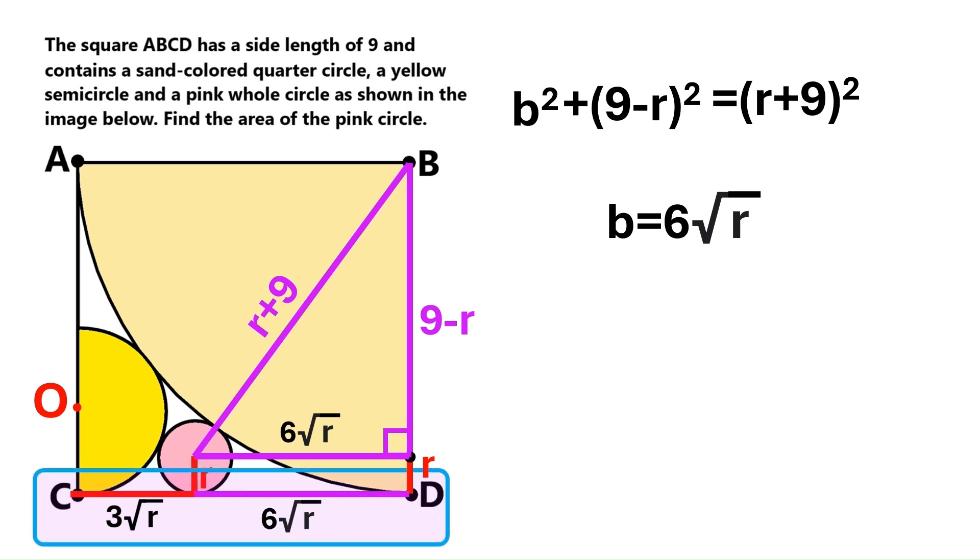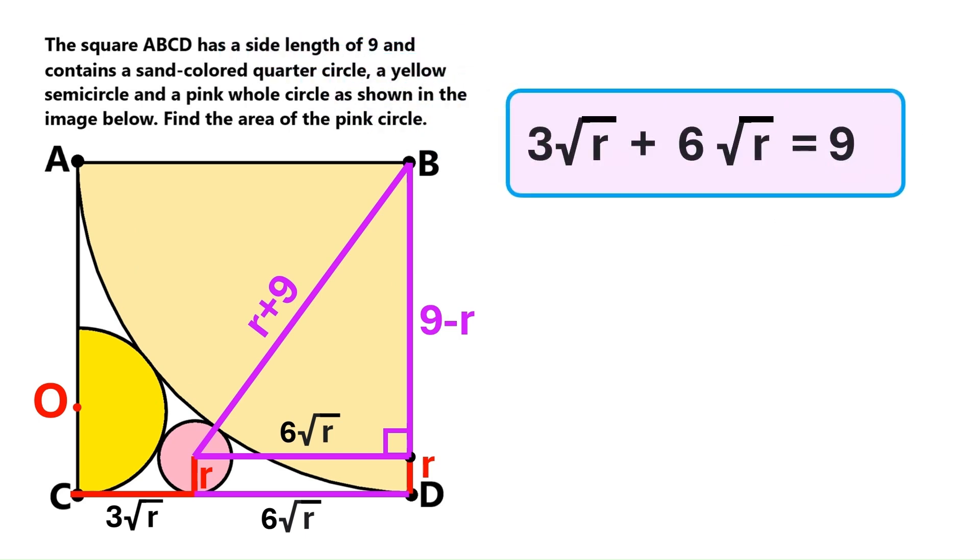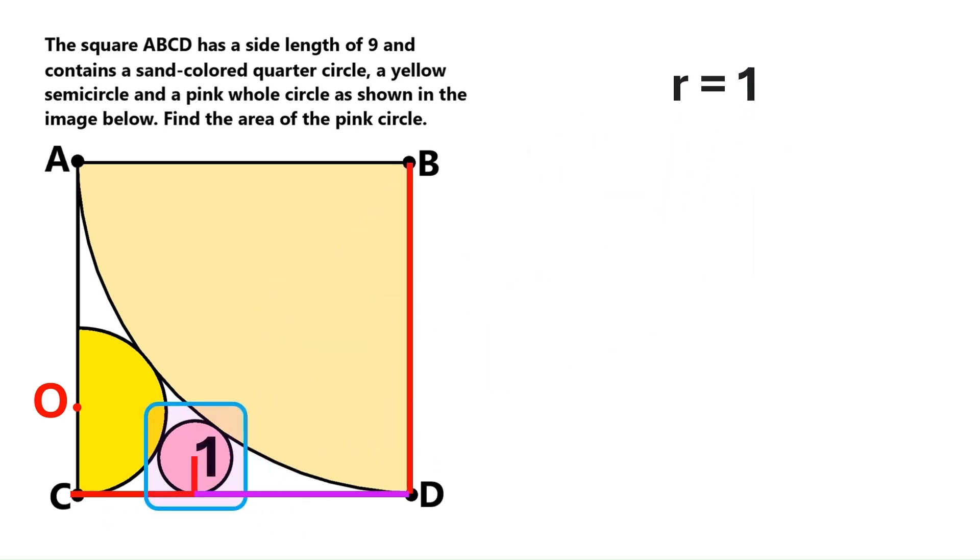These two distances must add up to the side of the square, which is 9. We can now write down this equation. It leads us to this. And this. The pink circle's radius is 1. What a beautiful number.